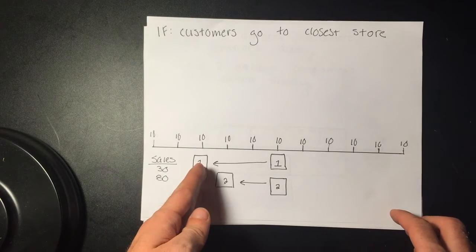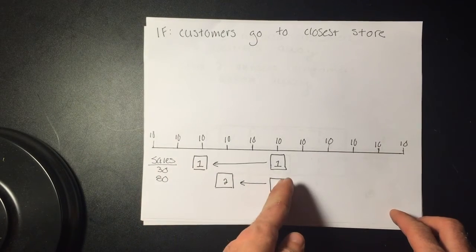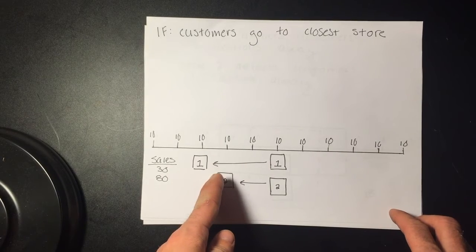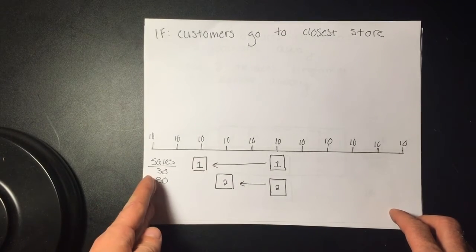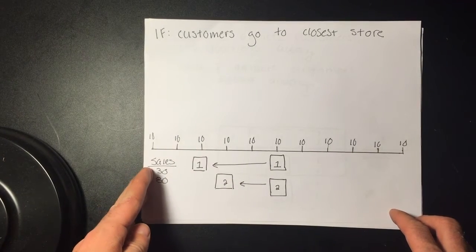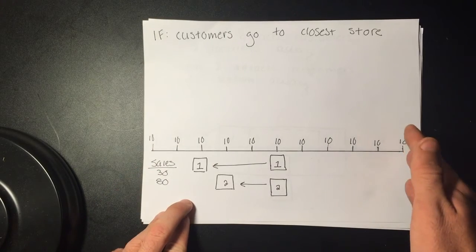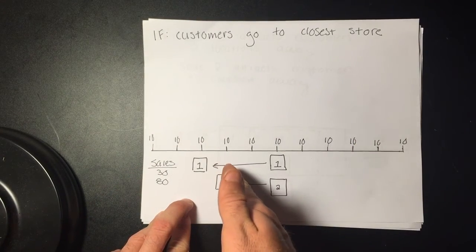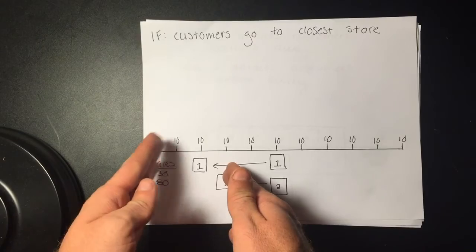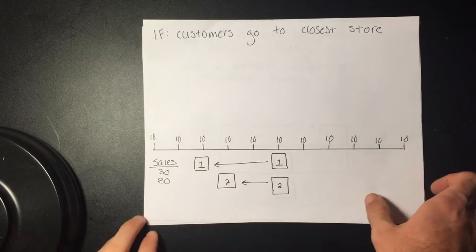However, if store 1 was to begin at location 3, then store 2 would move to location 4 in order to maximize their sales at 80, while store 1 only has 30 sales. This is because all consumers to the right will go to store 2, while all consumers to the left will go to store 1, since it is the closest store to them.